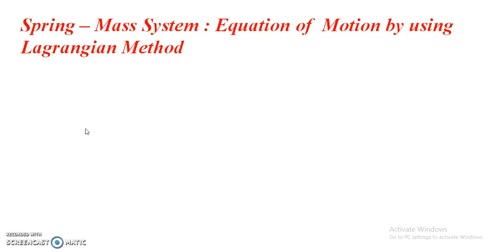We know that a spring-mass system is an example of a linear harmonic oscillator. In order to solve the spring-mass system problem, we are going to consider the ideal spring-mass system, which consists of a massless spring. One of its ends is connected to a mass M and the other end is connected to a rigid support.